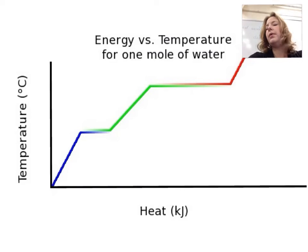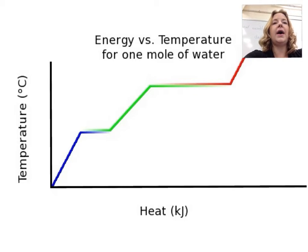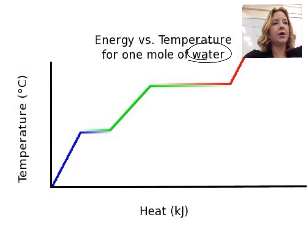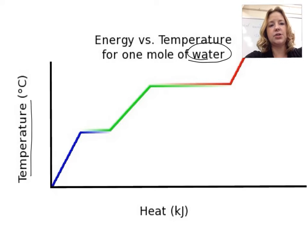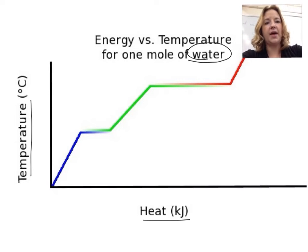On this graph, what we want to look at is what temperature materials go through a phase change. We can see that we are looking at water. On the y-axis we have temperature, and on the x-axis we have heat. I'd like you to draw in the same things that I'm drawing into the graph.